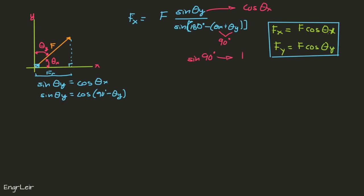...is F times the cosine of the angle towards that axis, so toward the x-axis. Similarly, the component in the y-axis is F times the cosine of the angle towards the y-axis. So that is how I remember this equation.